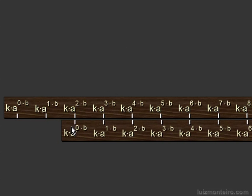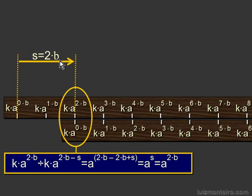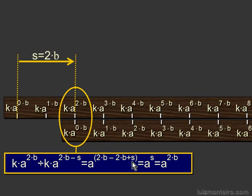Now I'm going to move the bottom ruler so it's 2 units from the origin and see what happens. So the distance will be s equals 2 times b. If I divide the top one by the bottom one, it's going to look something like this. The k's will cancel out because k divided by k is 1. And in the exponent here you're going to have the 2 times b, and then since you have divided by, minus whatever is in this exponent here, so minus 2 times b plus s. And the answer simplified will be a to the power of s, which is a to the power of 2 times b.